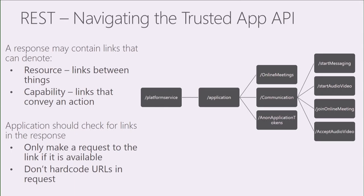This model is the same model you've seen within UCWA — an architectural pattern with a set of resources and capabilities, all communicated over HTTP via standard CRUD-based requests. The API is designed very similarly to UCWA: you have resources like online meetings, capabilities like start messaging, a single entry point, and you navigate through the API graph to access those capabilities. Key principles like hypermedia translate from UCWA — for example, you should not hard-code URLs; always dynamically grab them in case capabilities change from tenant to tenant or environment to environment.